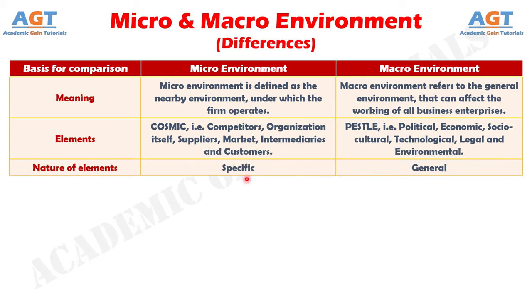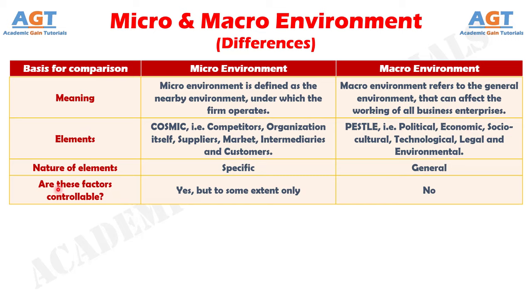Number 3: the nature of elements is very specific in micro environment, whereas the nature of elements is general in macro environment. Number 4: the micro environmental factors are controllable by the business, but to some extent only, whereas the macro economic variables are uncontrollable.